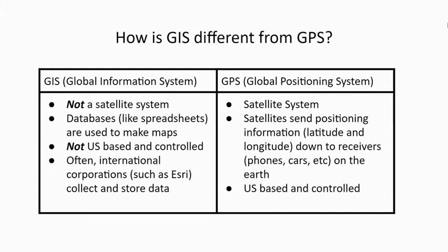How is GIS different from GPS? The Global Positioning System, which we learned about last week, is a US-based satellite system used to find the exact location of something on the Earth's surface. It uses satellites in orbit around the planet, each of which is controlled from tracking stations that monitor and control the satellites when necessary. Those satellites send information down to receivers on the ground. When you're holding a GPS receiver — also known as a smartphone or other GPS-compatible device — you are receiving signals from these satellites.